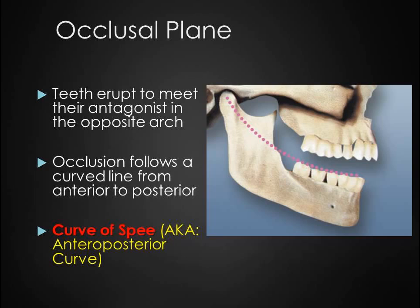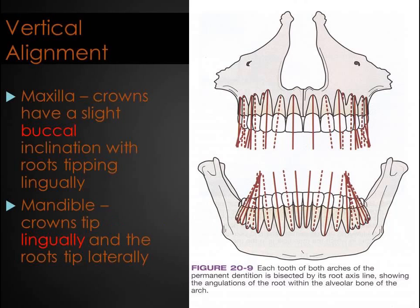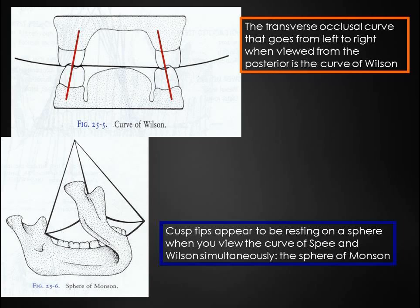Let's look at the occlusal plane and the curve of Spee. The curve of Spee is the front-to-back curve from the cusp of the mandibular canine that goes through the posterior teeth to the anterior portion of the condyle. Looking at the vertical alignment of the teeth from an anterior view, we can see that the crowns of the maxillary teeth have a buccal inclination while the crowns of the mandibular teeth incline lingually. This inclination makes it possible for maxillary palatal cusps to contact mandibular teeth and mandibular buccal cusps to contact the maxillary teeth. The curve of Wilson is the transverse occlusal curve that goes from left to right when viewed from the posterior and is created by the axial inclination of the maxillary versus the mandibular teeth.